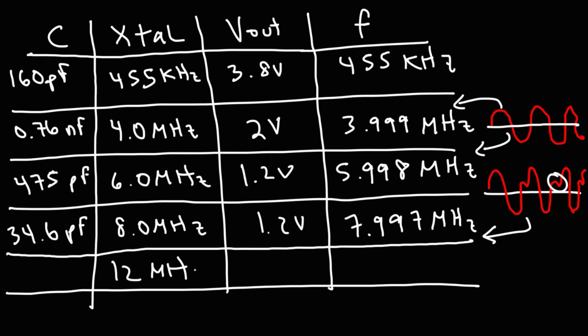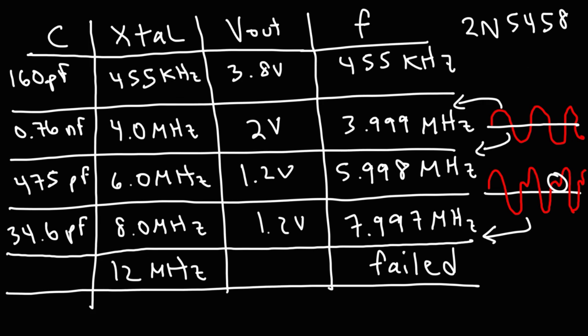Using a 12 megahertz crystal oscillator, the circuit failed to oscillate. The lowest capacitance I had was a 10 picofarad capacitor. I put two in series to reduce it to 5 picofarads, and it still didn't oscillate. Nevertheless, the Pierce oscillator circuit is very useful and easy to design. The JFET transistor used was the 2N5458 N-channel JFET transistor, for those who want to test this circuit.